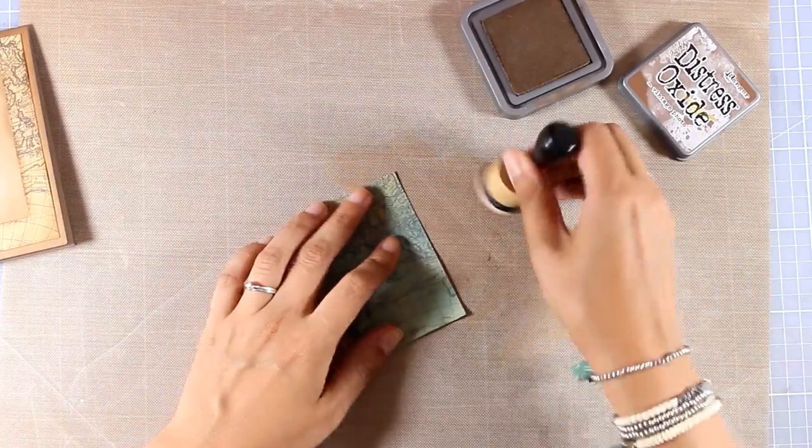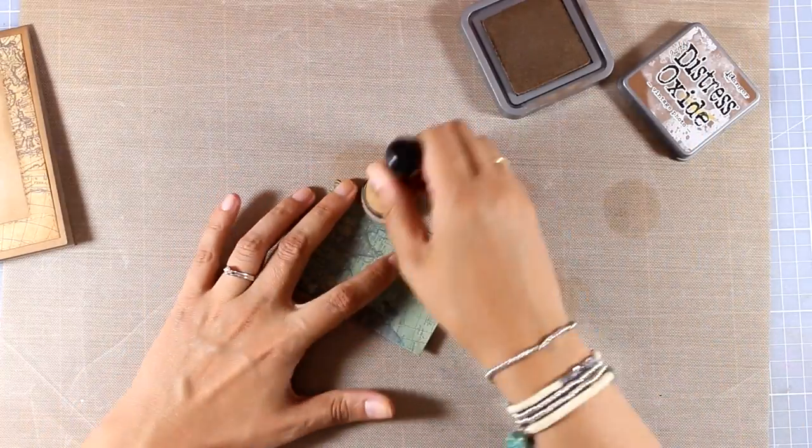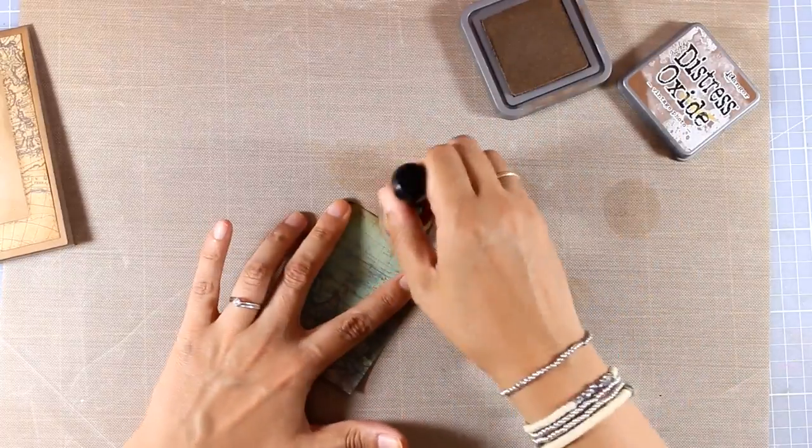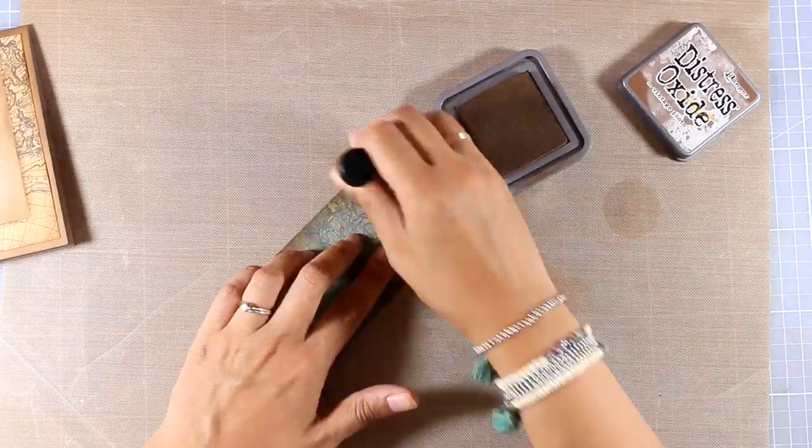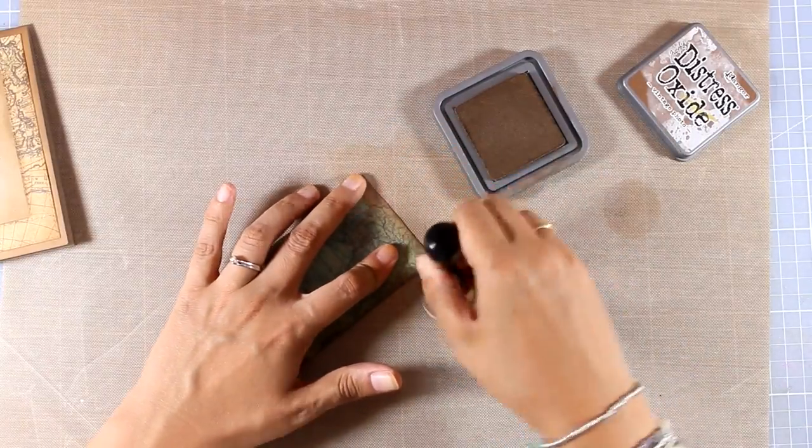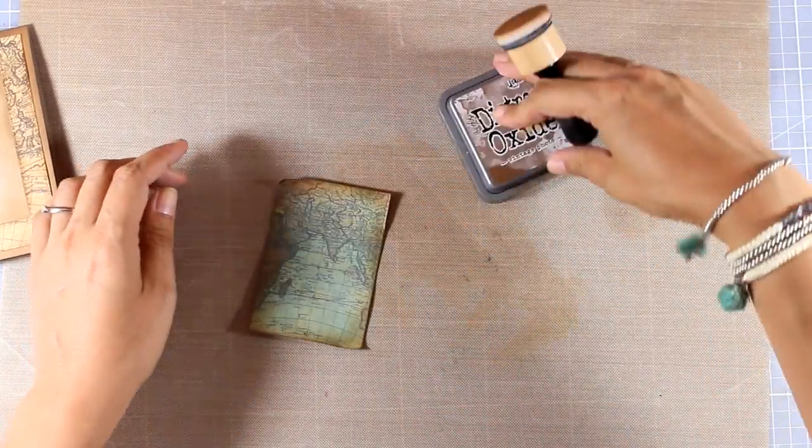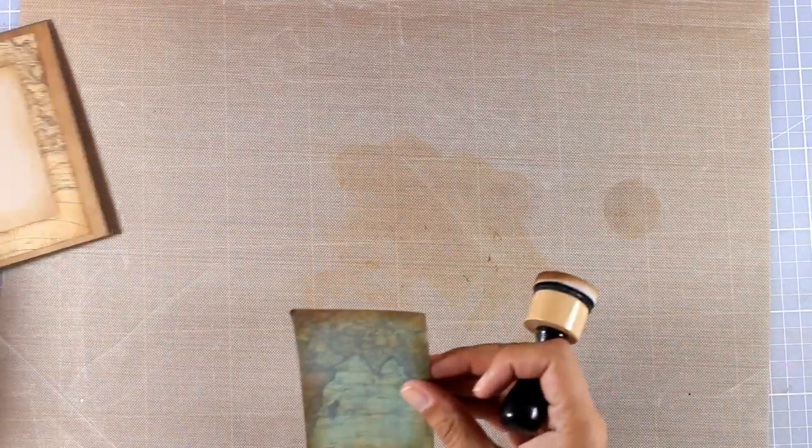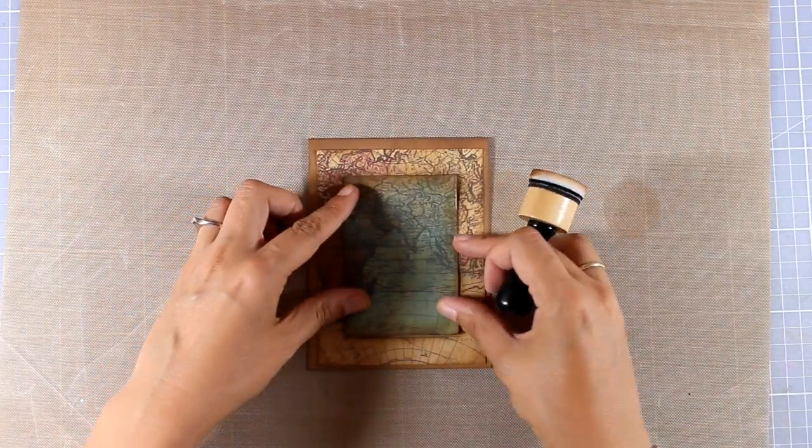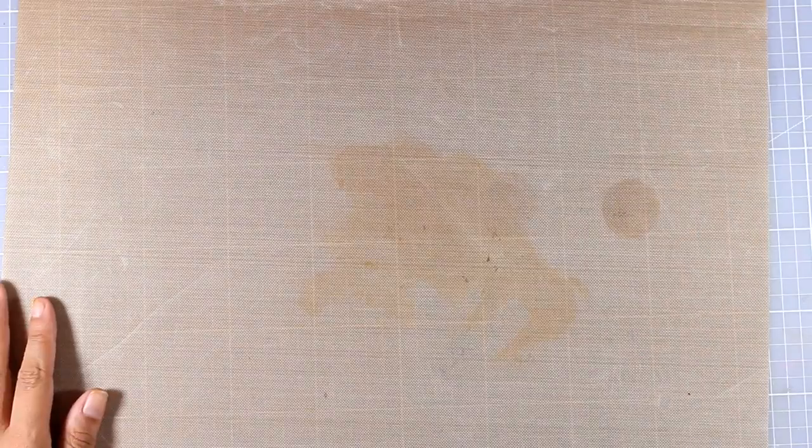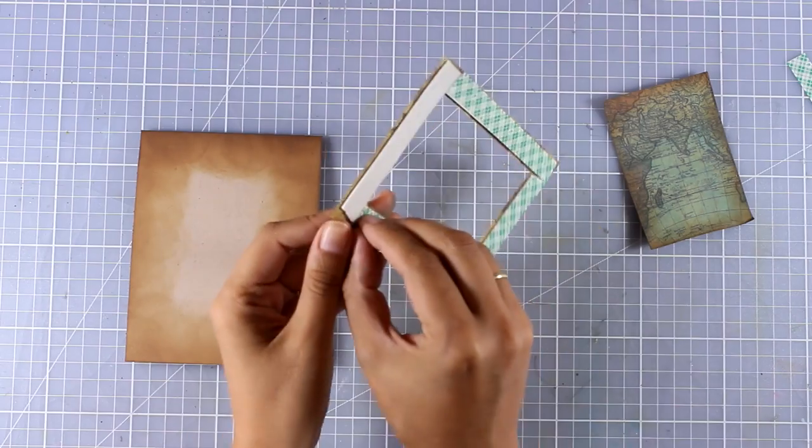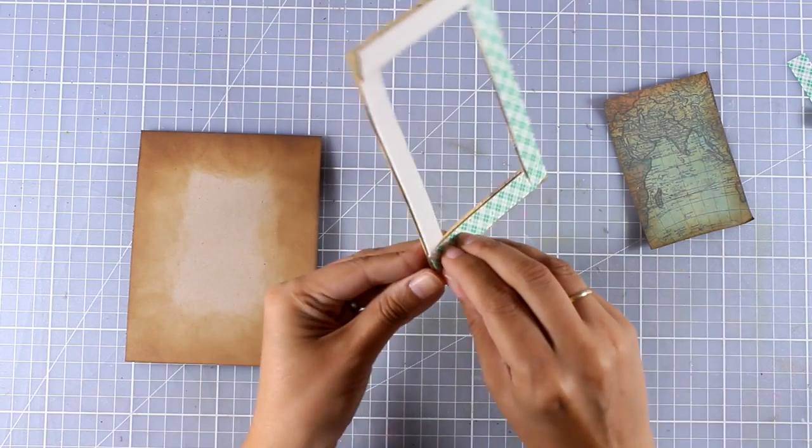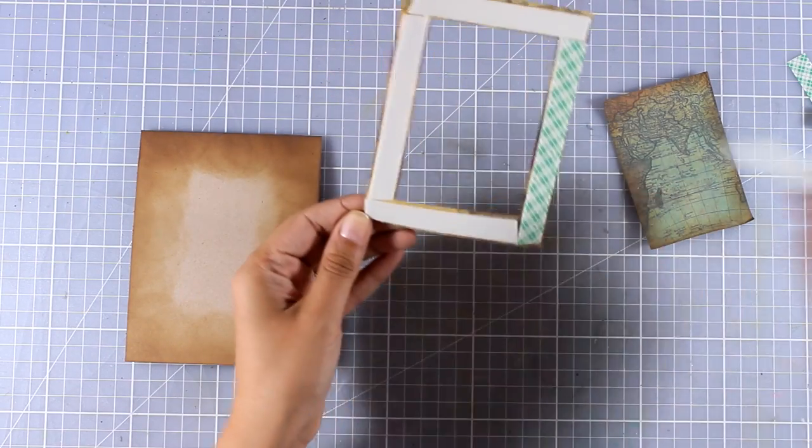I'm also going to use Vintage Photo to touch up the edges of the inside panel. Always remember that if you have different elements for one project, if you touch it up with the same color of ink then it actually brings everything together. This is a tip I usually follow for my art journal layouts but it's perfect for cards as well. Now I've added some foam tape at the back of my frame, I'm going to peel it off and stick it on top of my card base.